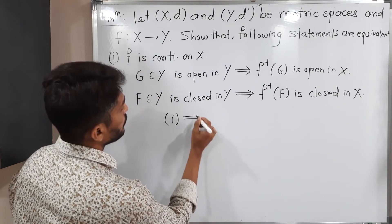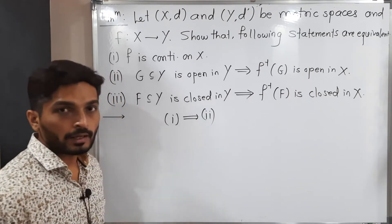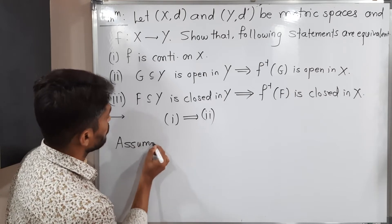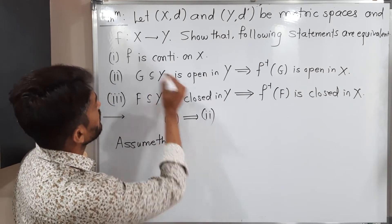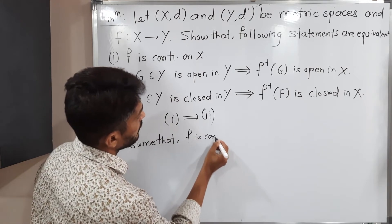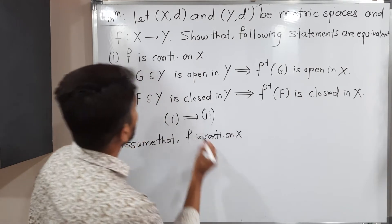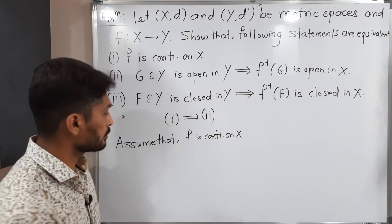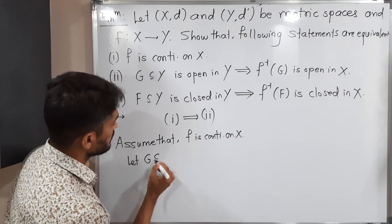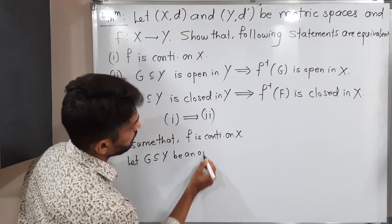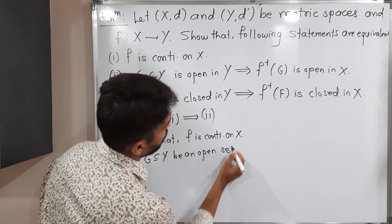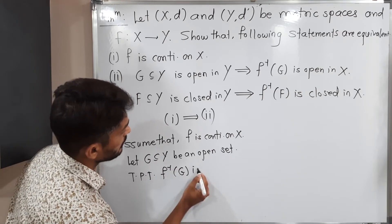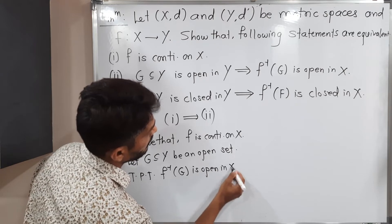First we are going to prove 1 implies 2. That means we will assume statement 1 and we will prove statement 2. So assume that f is continuous on X. We have to prove that if G is open in Y, then f inverse of G is open in X. Let G be a subset of Y that is an open set. We have to prove that f inverse of G is open in X.